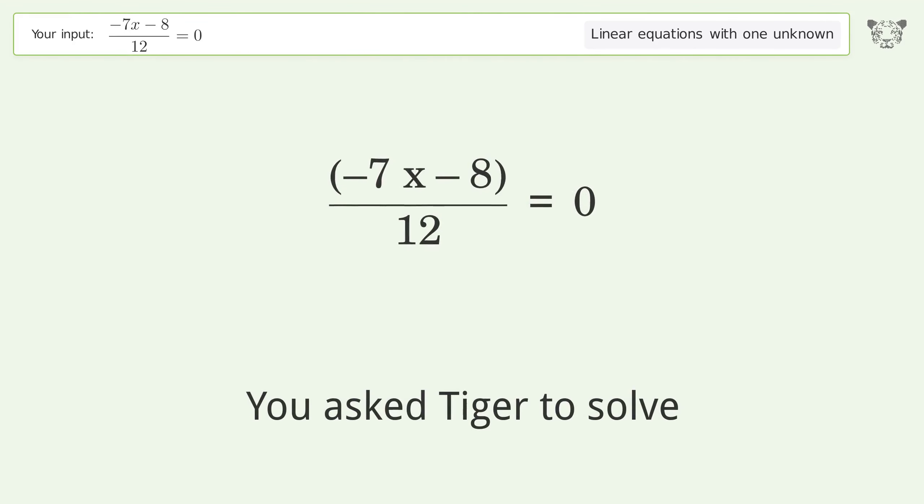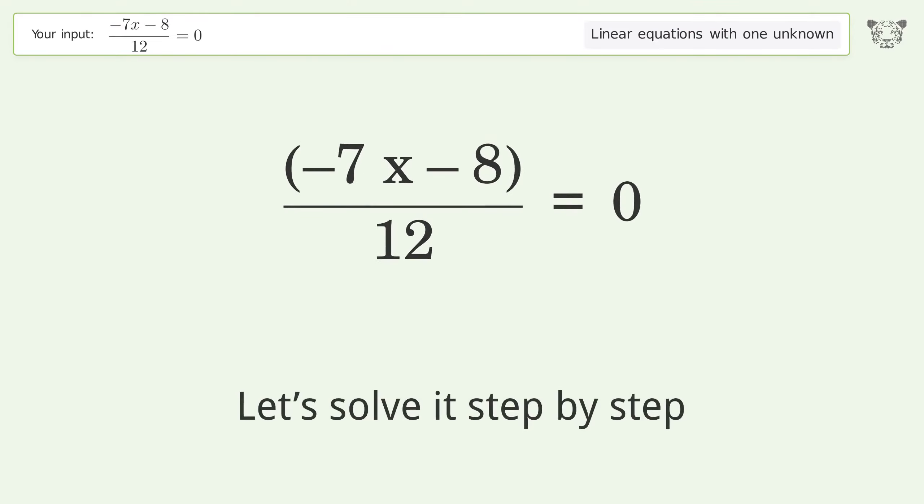You asked Tiger to solve this. It deals with linear equations with one unknown. The final result is x equals negative 8 over 7. Let's solve it step by step.